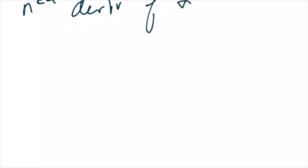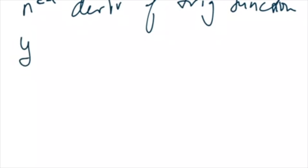Welcome back, this is the Math Dealer and we're talking about the nth derivative of some trig functions. I'm not going to go find the nth derivative of secant or anything crazy like that — we're talking about sines and cosines, just keeping it simple. So basically it starts out like this: let's say y is equal to sine of x and you're asked to find the 30th derivative, because calc teachers do that to you.